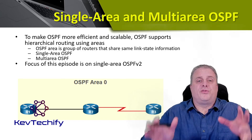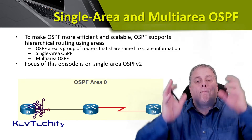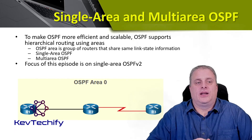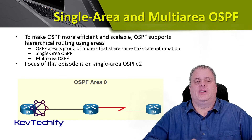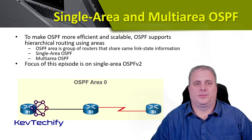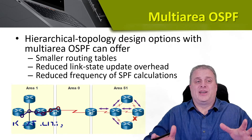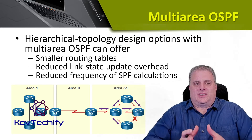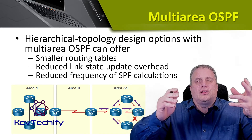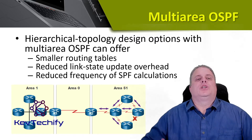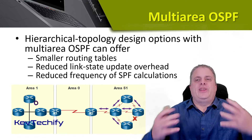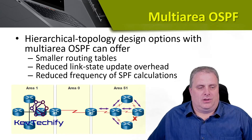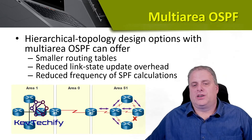To make OSPF even more efficient and scalable for larger networks, we can have multiple areas — and that's where multi-area OSPF comes in. The focus of this episode is on single-area OSPF version 2. Multi-area OSPF is a hierarchical topology design that gives us the ability to scale to much larger networks. For example, we might have area 1, area 0, and area 55 — three different areas.